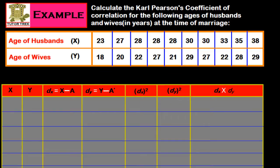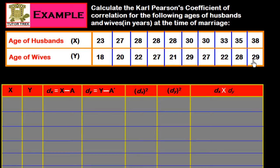We will look at one numeric example to better understand the Karl Pearson coefficient of correlation for raw or individual series using the shortcut method. The question asks us to calculate the Karl Pearson coefficient of correlation for the following ages of husbands and wives in years at the time of marriage. Age of husband (x): 23, 27, 28, 28, 28, 30, 30, 33, 35, 38. Age of wives (y): 18, 18, 20, 22, 27, 21, 29, 27, 22, 28.